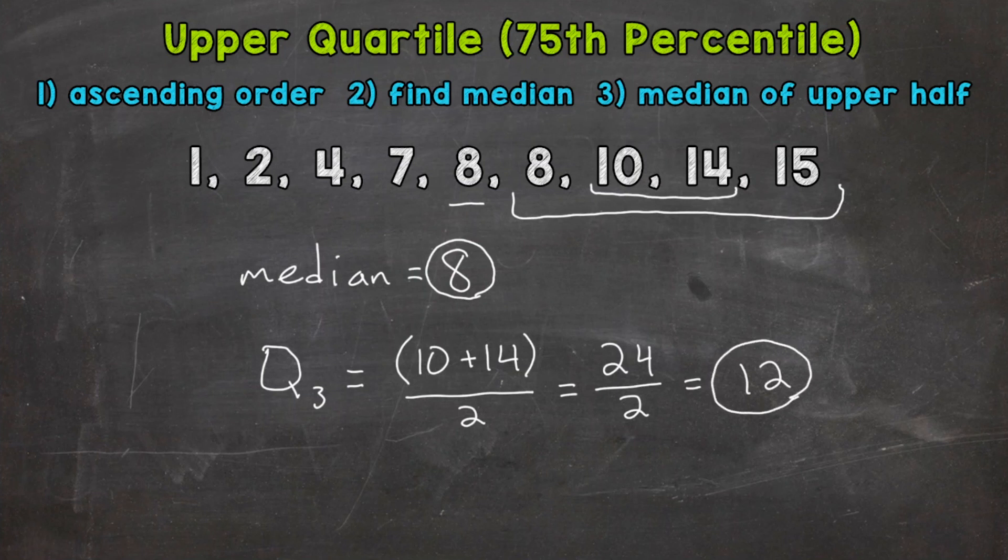This means that 75% of our data is less than 12 and 25% is greater than 12. So I'm going to make some marks in our data to help us visualize and understand all of this. And I'll start with the median, which again was eight. So this was our median. It's the midpoint of our data, the 50th percentile. It splits our data in half.